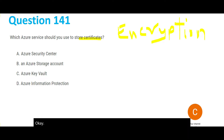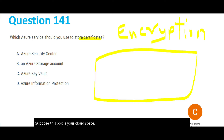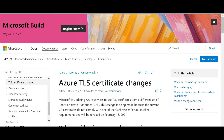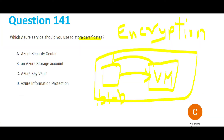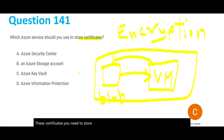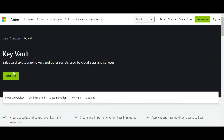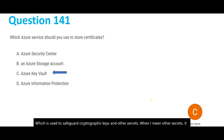Suppose this box is your cloud space. You have a blob storage service and you have a VM. Any communication between these should be encrypted. In the industry, it is encrypted using TLS certificates or TLS protocols. Now these certificates need to be stored somewhere. Common sense says that storage is Key Vault — a service used to safeguard cryptographic keys and other secrets like passwords and certificates.